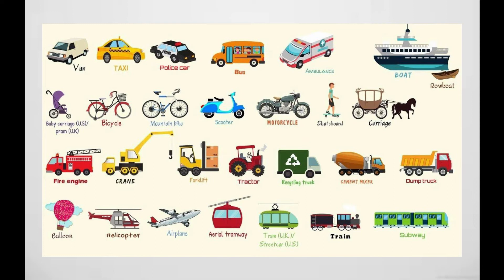We use vehicles to travel to different places. To go to another country, we travel by aeroplane, while to go to the local market we use a rickshaw. Why do we travel? We need to travel to go to school or workplace, to go to places like the market, hospital,